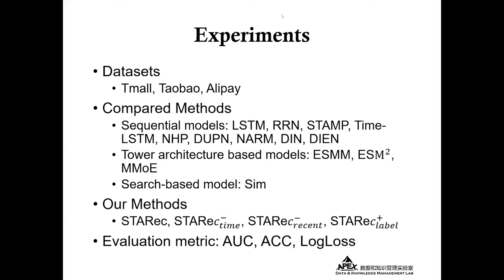Next is the experimental part, which we conducted on three large datasets from Alibaba. The methods we compare span four broad categories: sequential models, structural-based models, and search-based models. Our own model includes the central version of StarRack, StarRack with temporal information removed, StarRack with recent sequence removed, and StarRack with labeled data added.